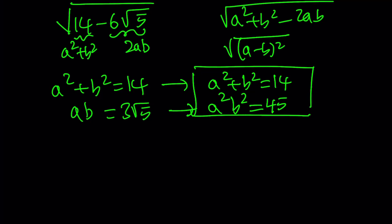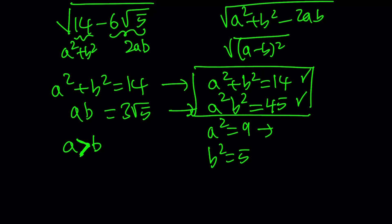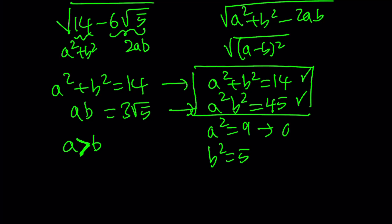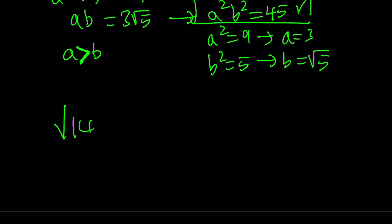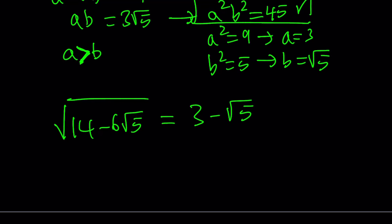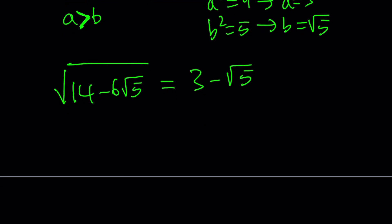I'll assume that a is greater than b, so that a minus b is always positive. Think about two numbers whose sum is 14 and whose product is 45 — those numbers are 9 and 5. So a squared is 9 and b squared is 5. Since a and b are positive quantities, a is 3 and b is root 5. So the square root of 14 minus 6 root 5 equals a minus b, which is 3 minus root 5. You can verify: squaring 3 minus root 5 gives 14 minus 6 root 5.